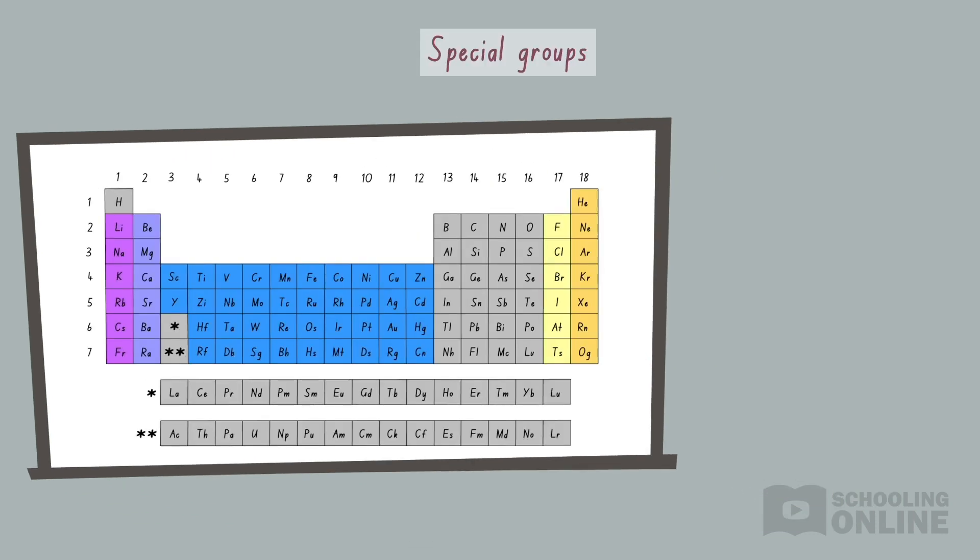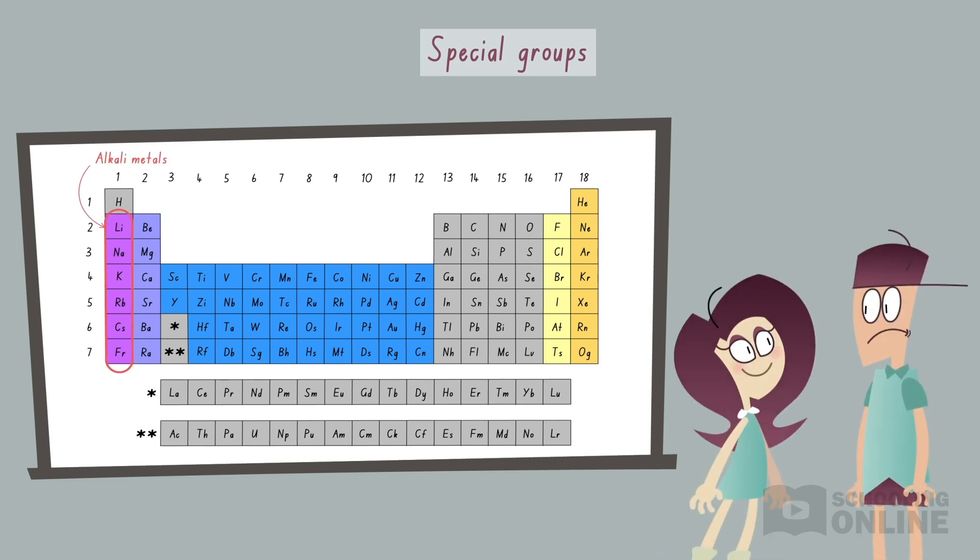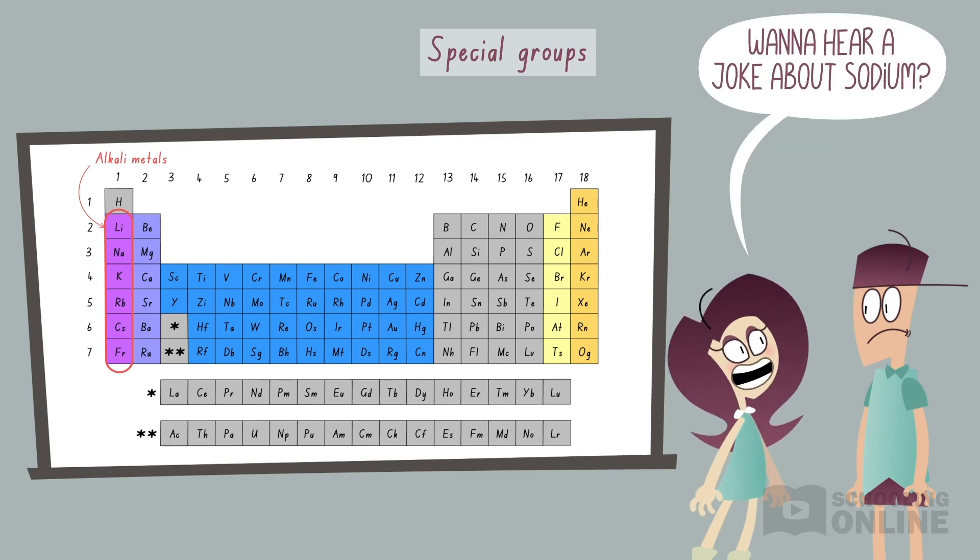We can also classify elements based on their group, or vertical column. Group 1 contains the alkaline metals, each having one valence electron. They are very reactive, sometimes producing explosions when they react with water.